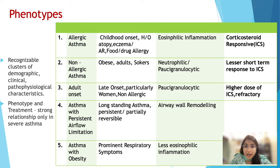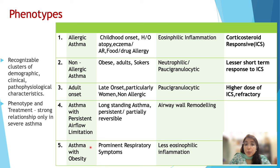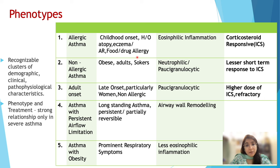GINA guidelines have divided asthmatics into five main phenotypes based on a lot of cluster analysis and research. These are: allergic asthma, non-allergic asthma, adult-onset asthma, asthma with persistent airflow limitation, and asthma with obesity as a separate entity. Allergic asthmatics usually start having asthma since childhood, with a strong history of atopy, eczema, food allergy, or allergic rhinitis. Because it's allergic, it has eosinophilic inflammation, and this group is very well responsive to corticosteroids.